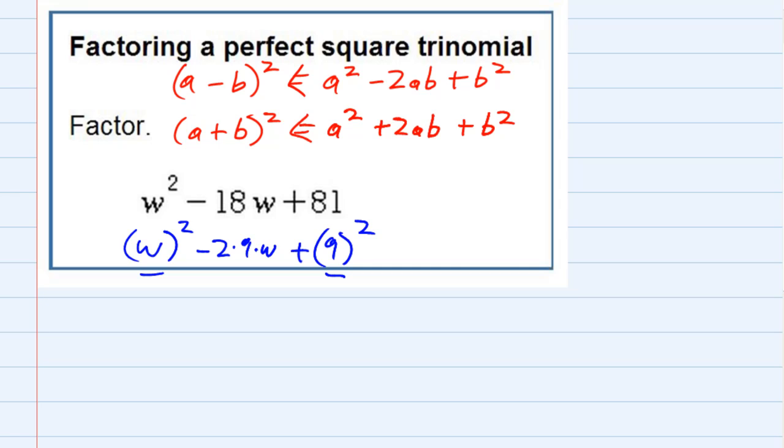So it fits the format here of our top trinomial, because the middle term is negative. So if I use that, then I can see that it's going to be the first term, which is our w.